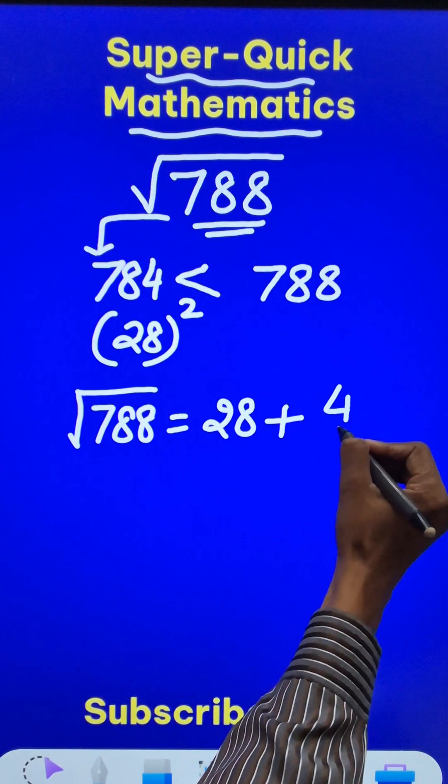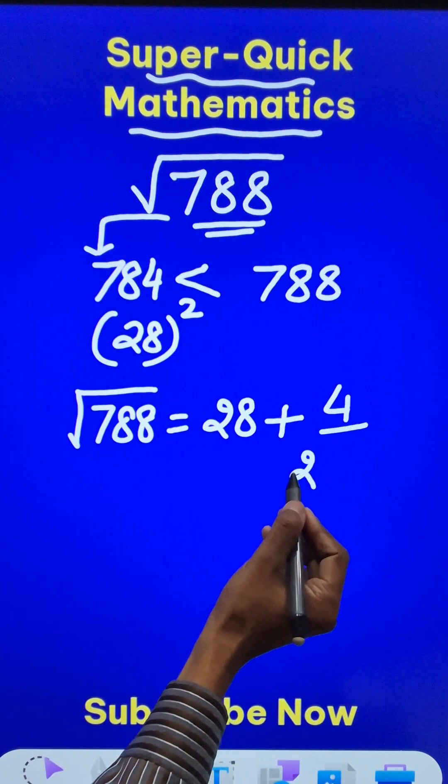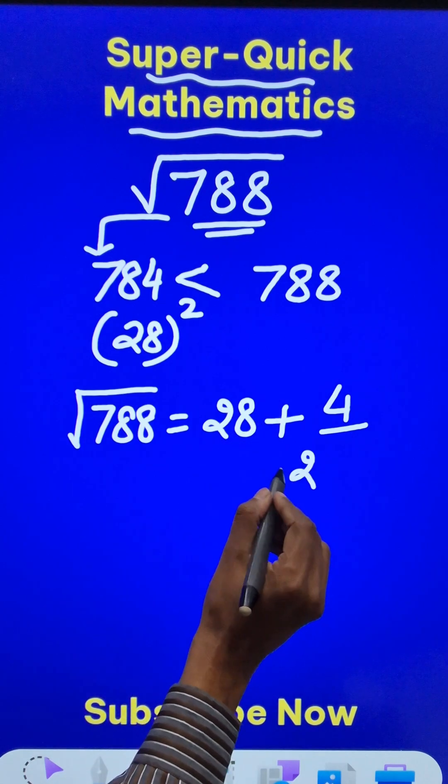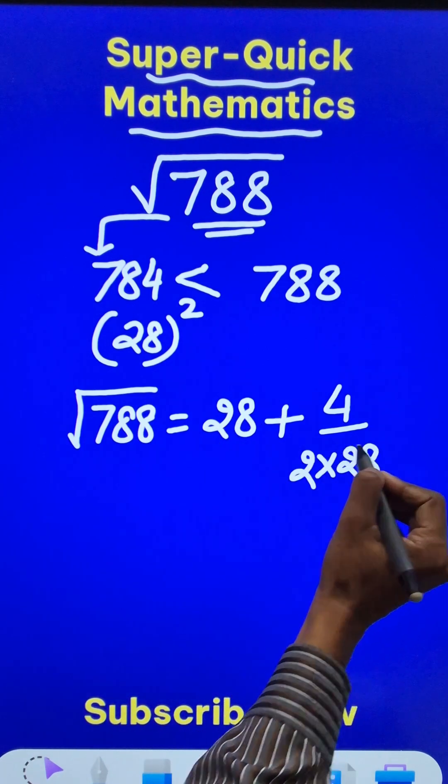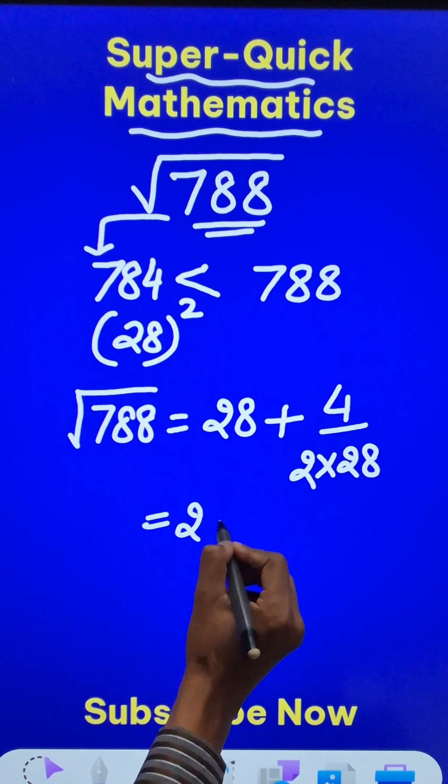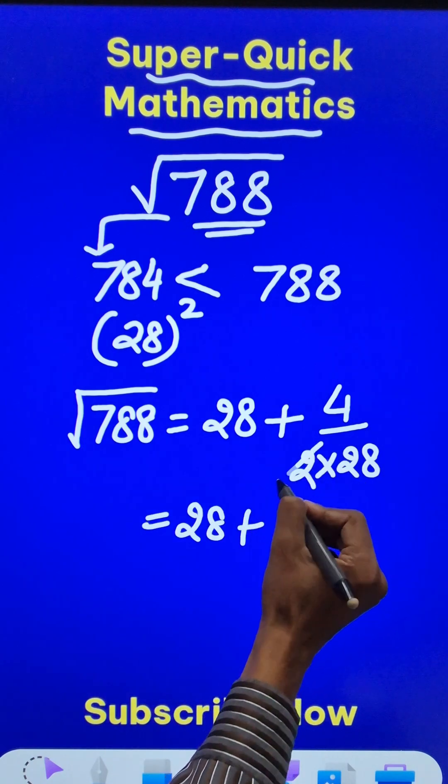So I will write plus 4 and this 2 is a constant number which I have to write in the denominator every time and the same number 28 will get multiplied here.